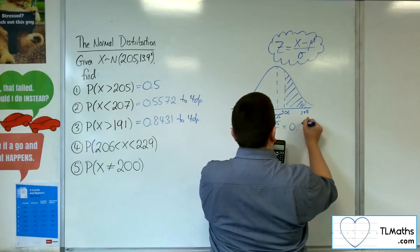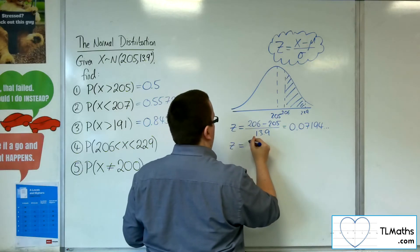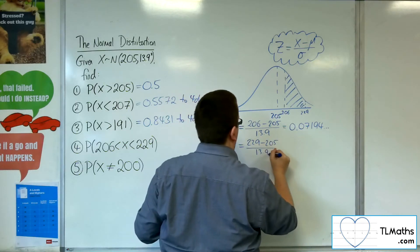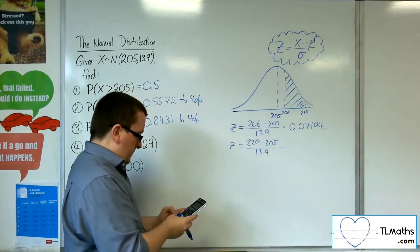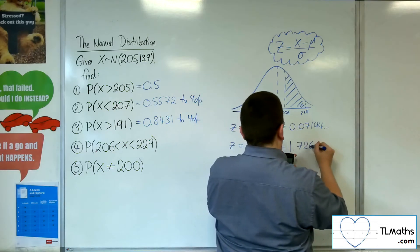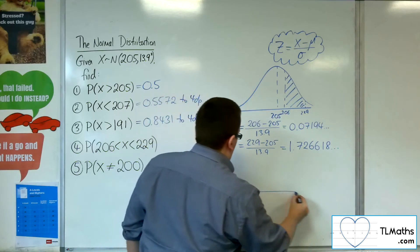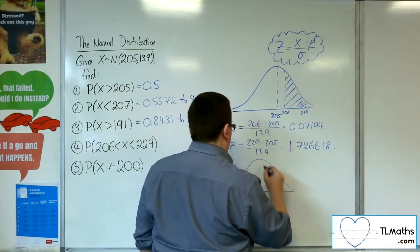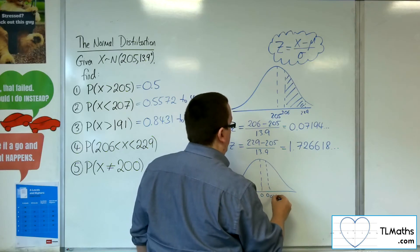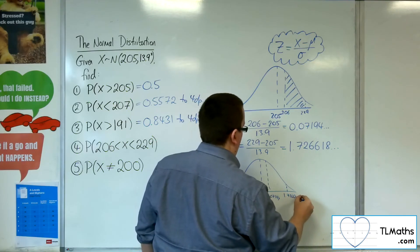So 1 divided by 13.9, and we get 0.07194. And the second z-value is 229 take 205 over 13.9. So that's 24 divided by 13.9, so that's 1.726618.